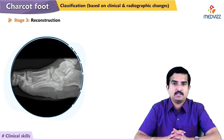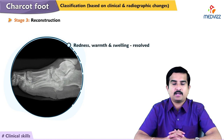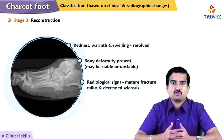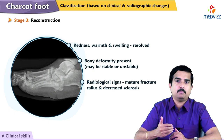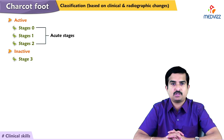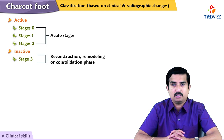Stage 3, the reconstruction stage, shows resolved redness, warmth, and swelling, with bony deformity that may be stable or unstable, and radiographs may show mature fracture callus and decreased sclerosis. Charcot neuropathy can be clinically classified as active — stages 0, 1, and 2 — and inactive — stage 3 — indicating whether the process is acute or in the consolidation or remodeling phase, which has a bearing on the timing and nature of surgery.